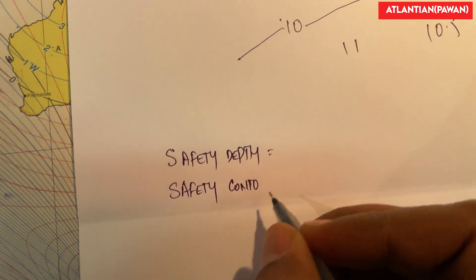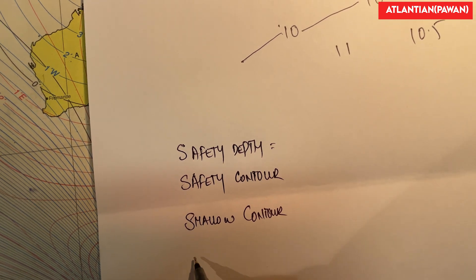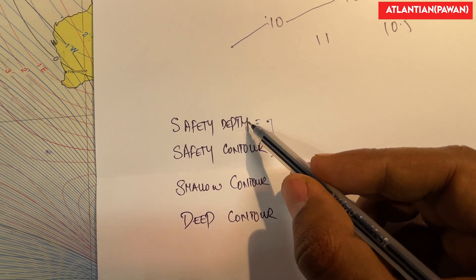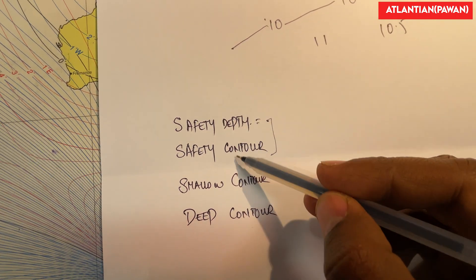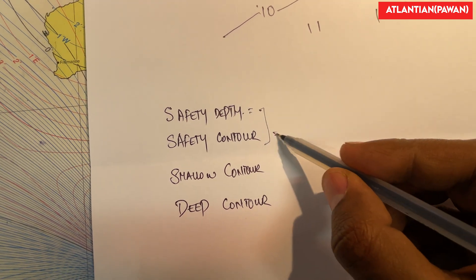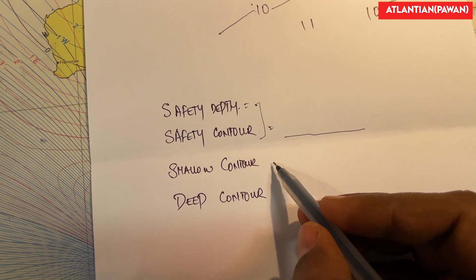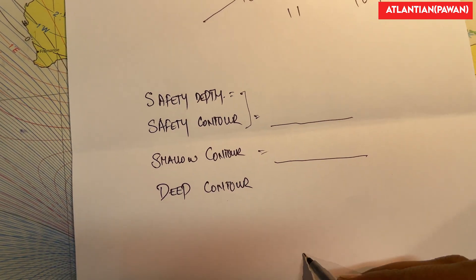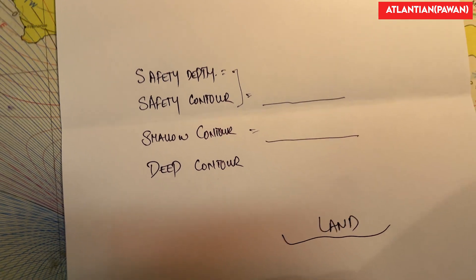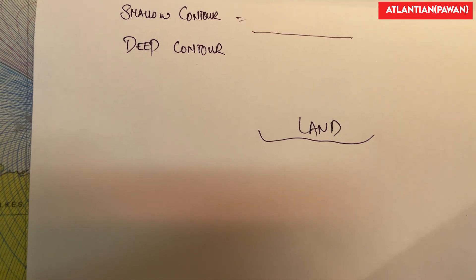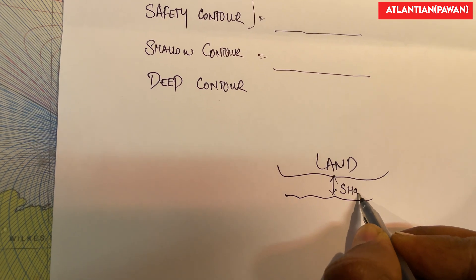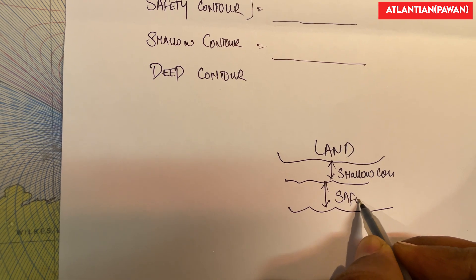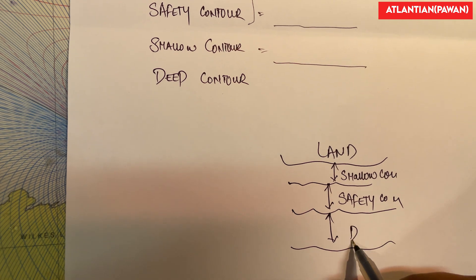Now we have four things: safety depth, safety contour, shallow contour, and deep contour. Safety contour is a contour within which a vessel can navigate safely. Shallow contour is a contour where, if a vessel navigates, there are chances of running aground. Let's say this is land and the vessel is approaching from the north — this will be the shallow contour, this will be the safety contour, and from here this will be the deep contour.